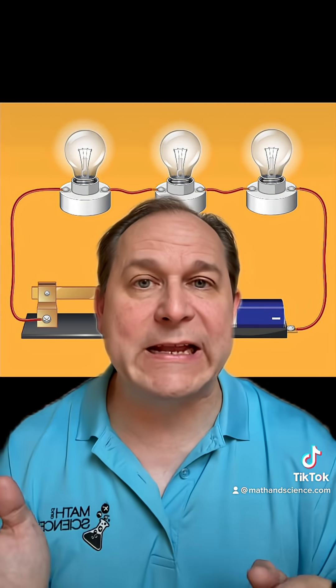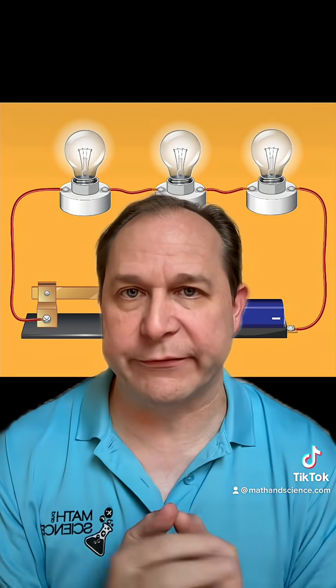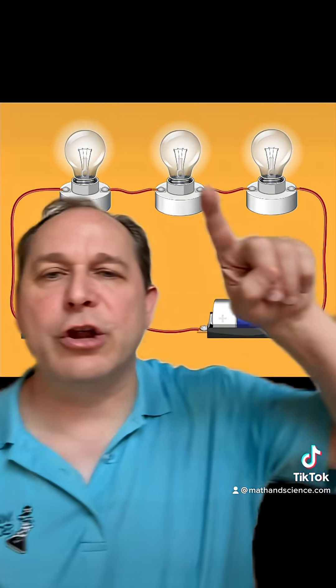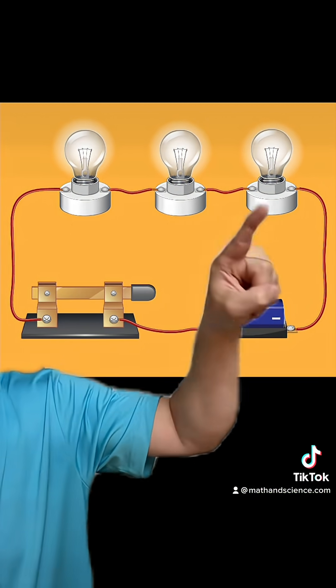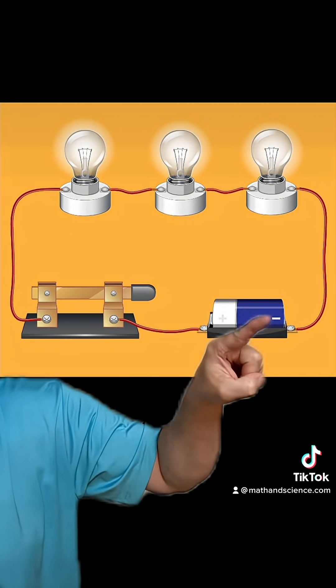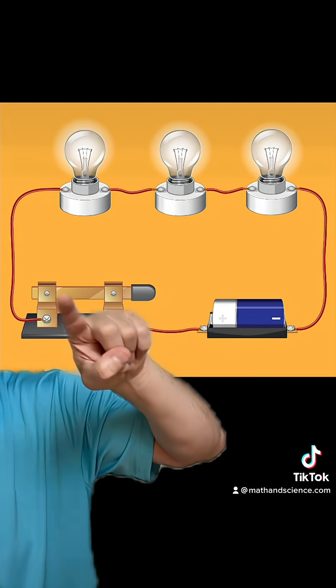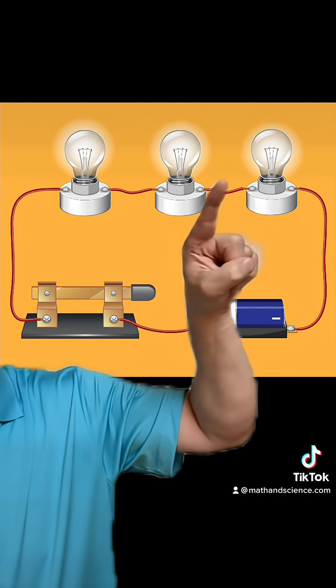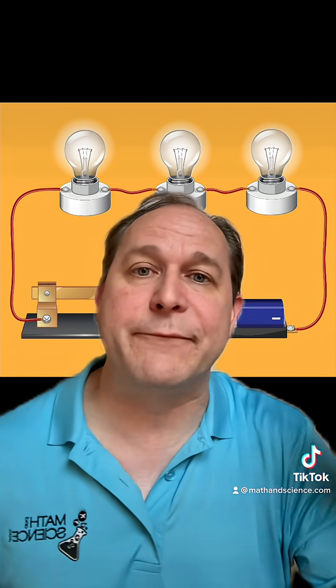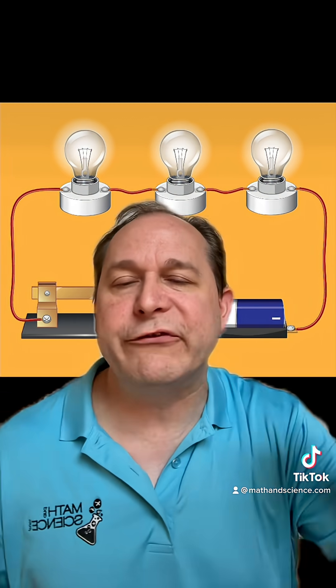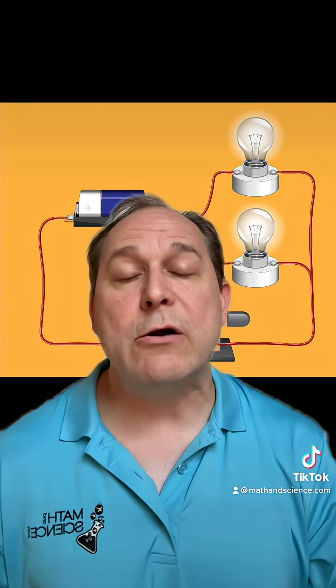Here's a question: what exactly is the difference between a series circuit and a parallel circuit? This is a little cartoon of a series circuit. The electricity comes out of the battery and goes through each of the light bulbs in series — that means one after the other — before returning back to the battery.